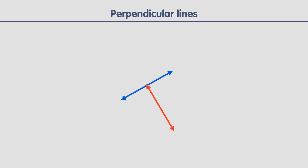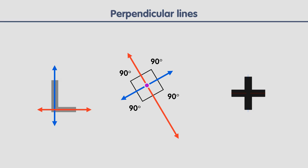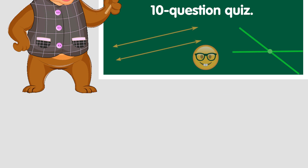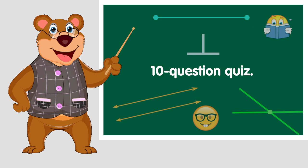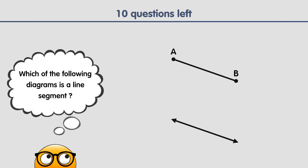Perpendicular lines are lines that form square corners when they intersect. Those corners are called right angles, or 90-degree angles. For example, the capital letter L is formed by two perpendicular line segments, or the plus sign.